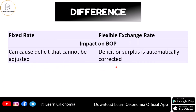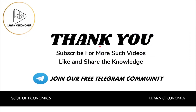Moving to the next basis of distinction: the impact on the Balance of Payment, or BOP. In the case of the fixed exchange rate system, a deficit can occur which cannot be automatically adjusted. But in the flexible exchange rate system, whether there is a deficit or a surplus, it becomes automatically adjusted as a result of the involvement of the market forces of demand and supply.